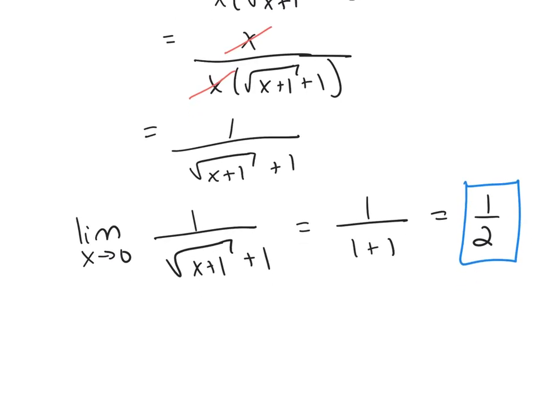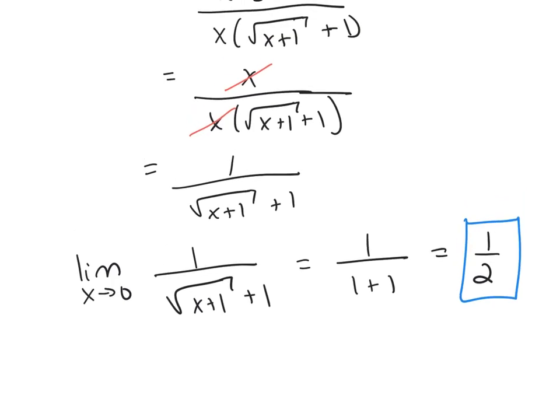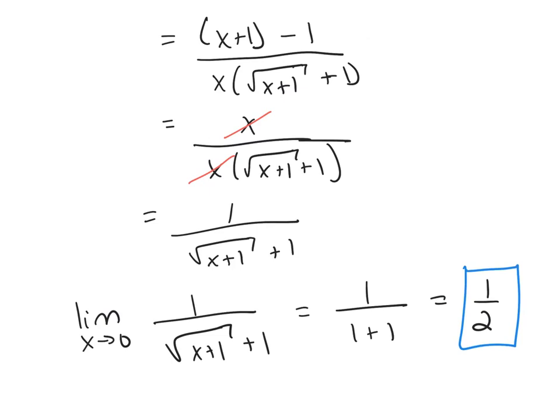So this idea of rationalization comes in very helpful. It's very beneficial because it gets rid of a square root for me. And in the end, because we got rid of that square root, we were able to cancel back here.